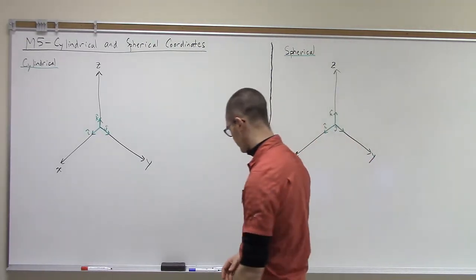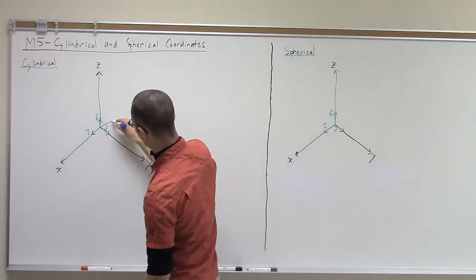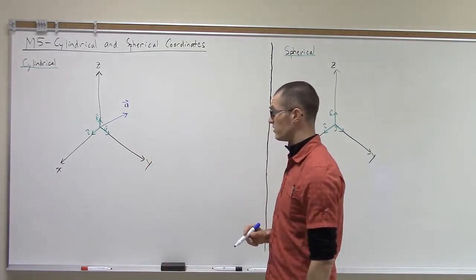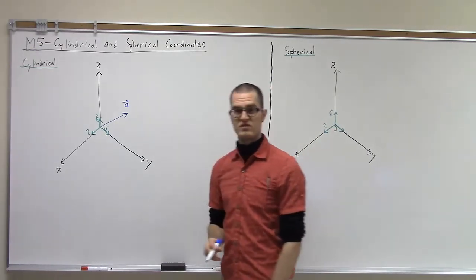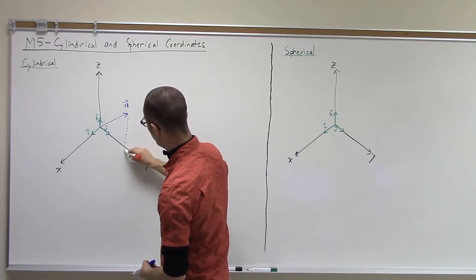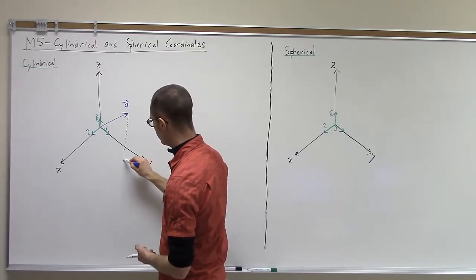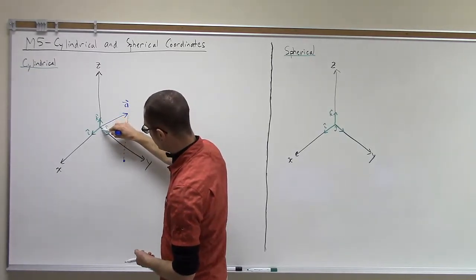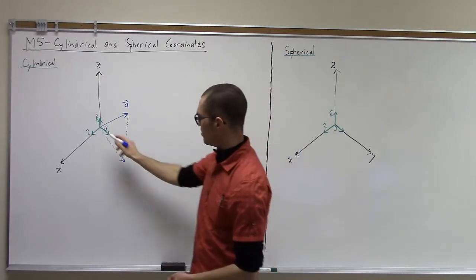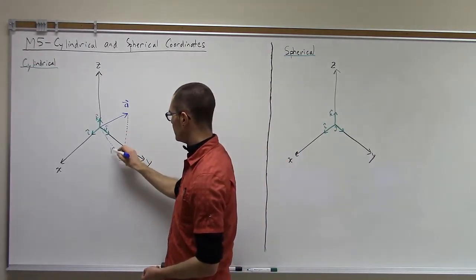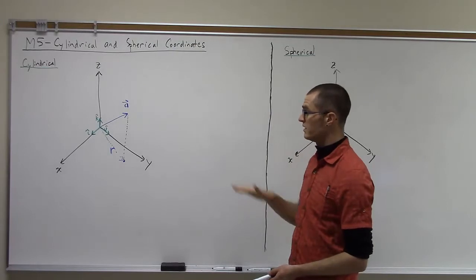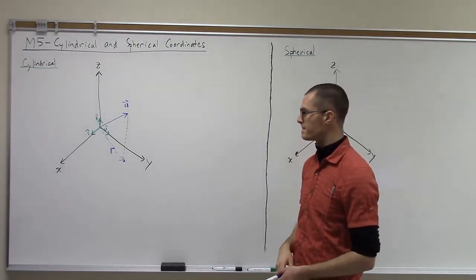Looking first at a cylindrical coordinate system, if we have a vector a here, as we had before in our Cartesian coordinate system, we can define its location in terms of cylindrical coordinates by looking at, say I project that point down to the x-y plane, and then take a vector from the origin to that point in the x-y plane. And I'll call this distance here r. So that's its distance from the z-axis in a plane parallel to the x-y plane. That's what r is.